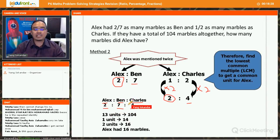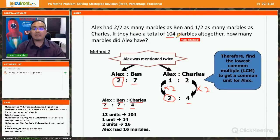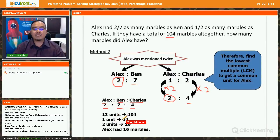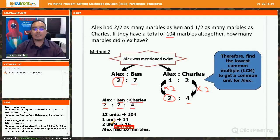Now how do you get 13 units? 2 plus 7 plus 4 is 13, right? So 13 is 104 marbles because in the question they say that if they have a total of 104 marbles altogether. So we add the number of units for Alex, Ben and Charles, 13 units, 104, 1 unit is 14.